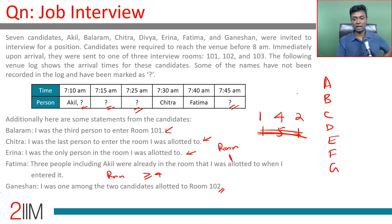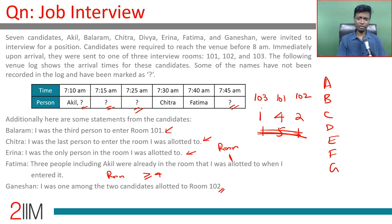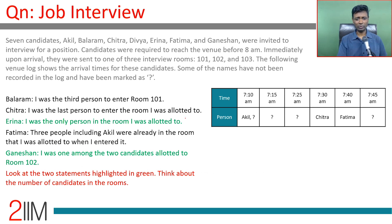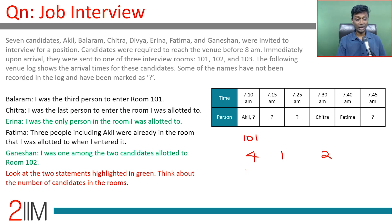Ganeshan says he was one of two candidates allotted to room 102, so two candidates in 102. Balram was the third person to enter 101, so at least three people are in 101. Erina is the only person in her room, so one room has just one person. The only possible distribution for seven people across three rooms is 4-2-1. So room 102 has two people, room 101 has four, and room 103 has one.